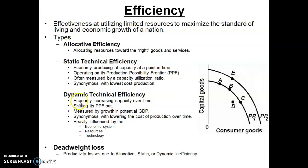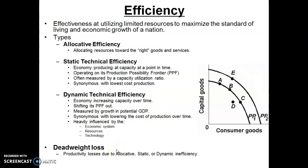Global efficiency would involve having all of these. We would have a system that produces the goods consumers want — allocative efficiency — in a technically efficient way at a point in time and over time. To the extent we don't achieve this global efficiency, we have what's called deadweight loss, which can come from a lack of allocative, static, or dynamic efficiency.